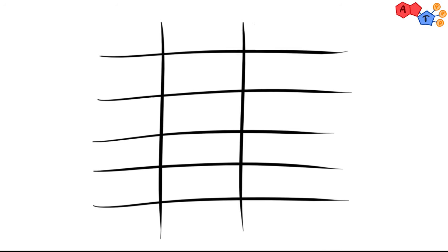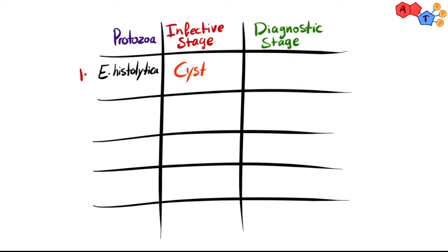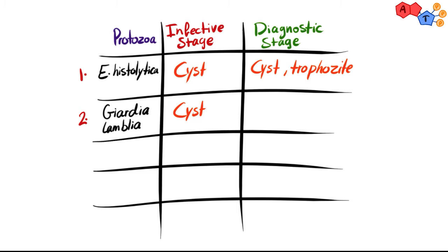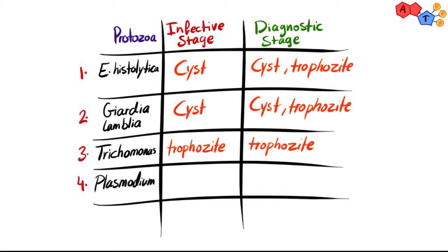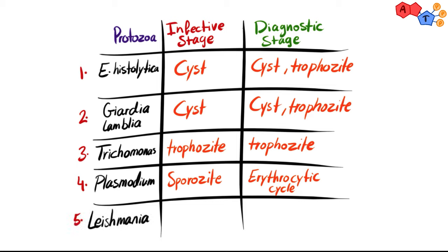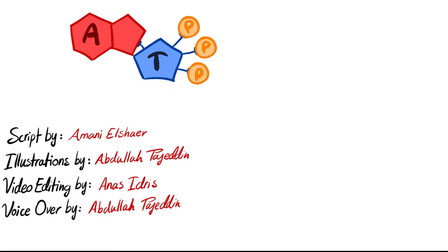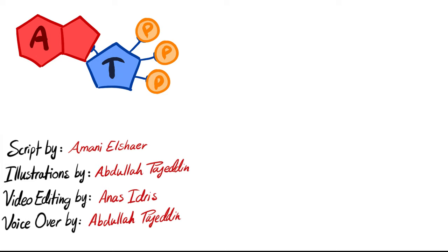To summarize the infective and diagnostic stages: for Entamoeba histolytica, the infective stage is the cyst and the diagnostic stage is the cyst and trophozoite. For Giardia lamblia, the infective stage is the cyst and the diagnostic stage is also cyst and trophozoite. For Trichomonas, which has no cyst, both the infective and diagnostic stages are the trophozoite. For Plasmodium, the infective stage is the sporozoite on the female mosquito and the diagnostic stage is during the erythrocytic cycle inside red blood cells. For Leishmania, the infective stage is the promastigote with its flagella and the diagnostic stage is the amastigote inside the macrophage.